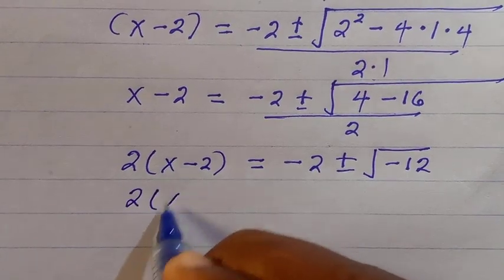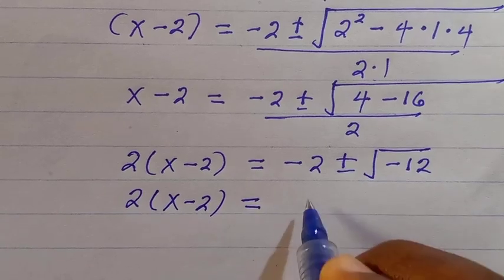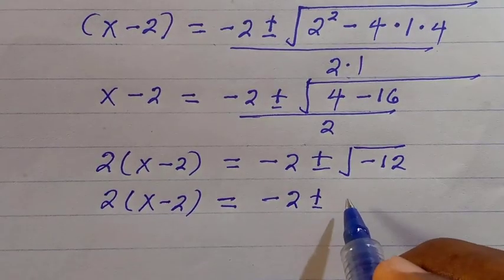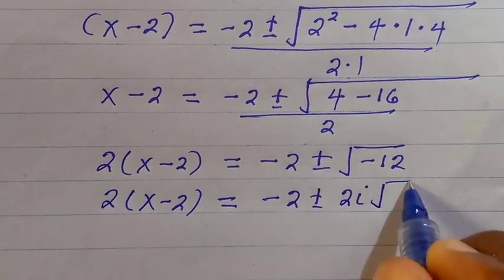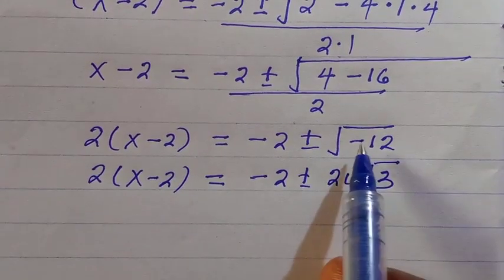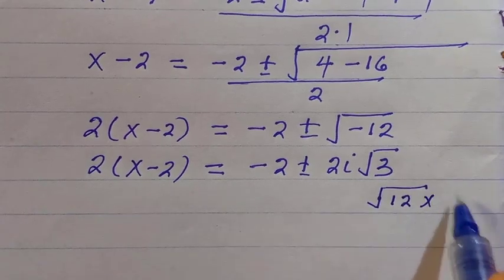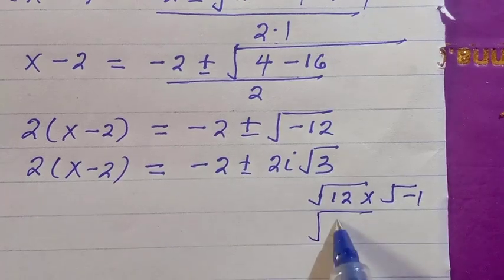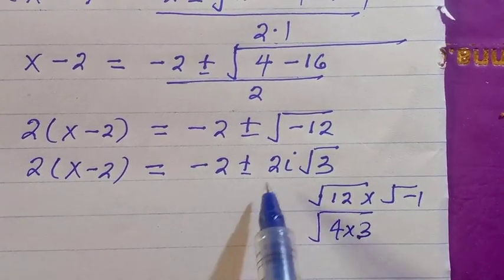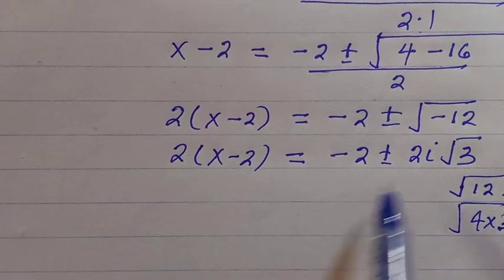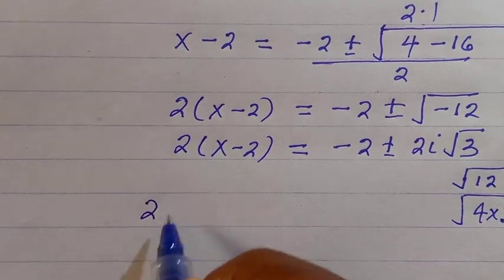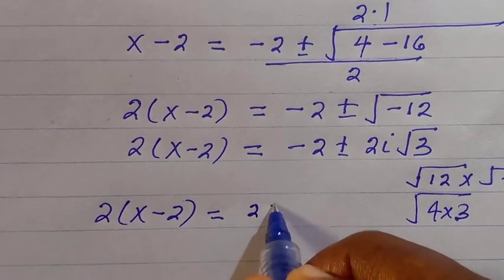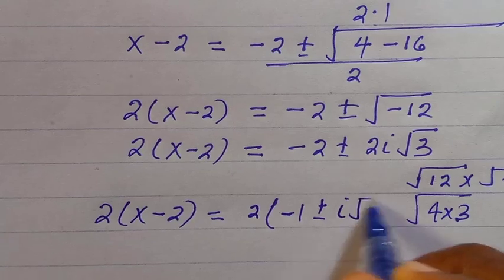We still have 2 times x minus 2 equals minus 2 plus or minus the square root of minus 12. We separate this as square root of 12 times square root of minus 1. The square root of minus 1 is i, and we break 12 into 4 times 3, giving 2i root 3. Taking out the common factor of 2, we get 2 times x minus 2 equals 2 times minus 1 plus or minus i root 3.